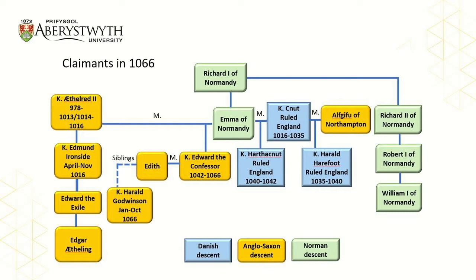It was the death of King Edward the Confessor of England on the 5th of January 1066 that led to the dynastic crisis which would culminate in the Battle of Hastings and the Norman Conquest of England. King Edward died without a clear heir and a number of competing claims were made for the throne. The first claimant was William, Duke of Normandy, who had a fairly distant connection to the English throne.